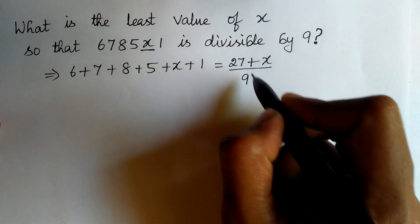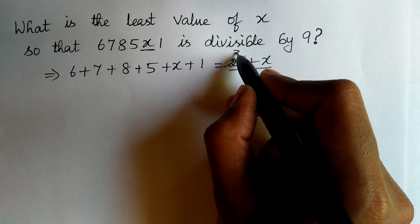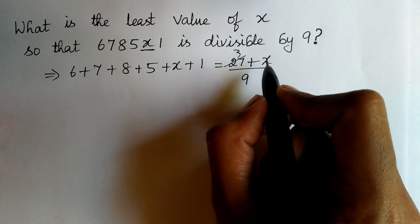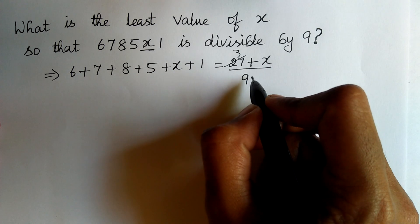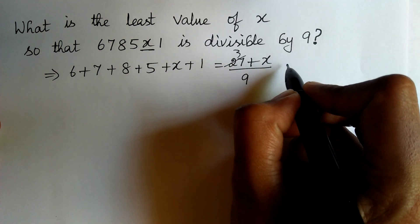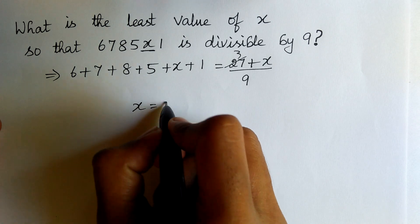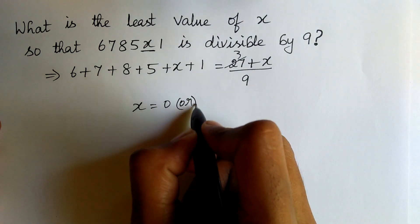We can see that 27 is divisible by 9. Therefore, for x to be divisible by 9, x should be 0, x equal to 0 or 9.